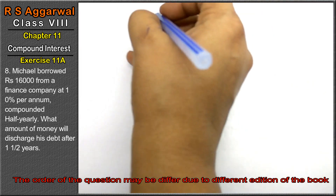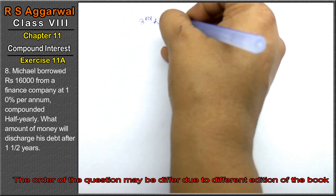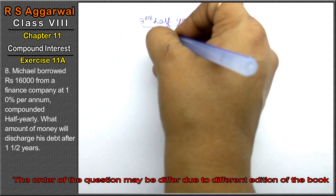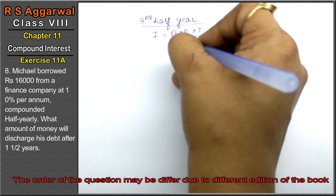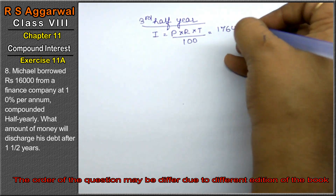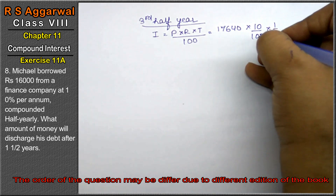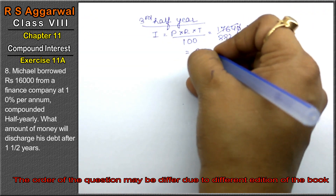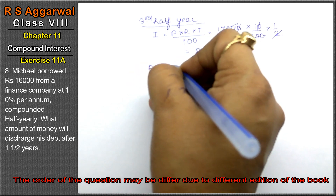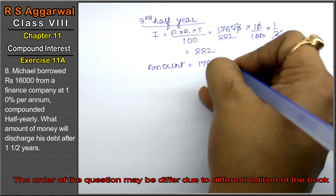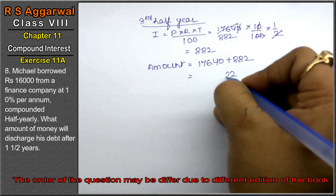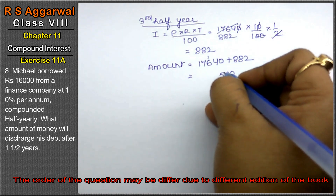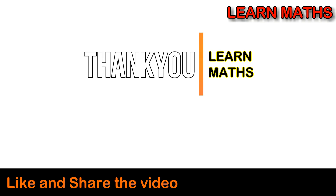Third half year: P is 17,640, R is 10%, T is half year. Calculating gives interest of 882. Final amount equals 17,640 plus 882, which is 18,522 as the answer. Thank you. If you understand the step-by-step solution, please subscribe to my channel on maths and share it with your friends.